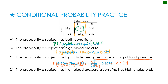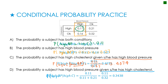Part D: probability of high blood pressure given high cholesterol. This is similar but now we assume high cholesterol. The numerator is still people high in both categories: 0.11. The denominator is everyone with high cholesterol, which I haven't calculated yet: 0.11 plus 0.21 equals 0.32. So 0.11 over 0.32 gives 0.3438.